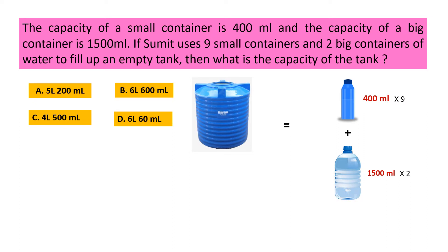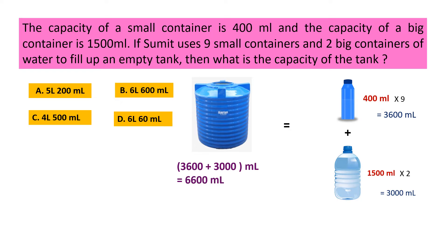Now let's find out the capacity of the tank. Capacity of nine small containers is equal to 400 milliliter multiplied by 9, which equals 3600 milliliter. The capacity of two big containers is equal to 1500 milliliter multiplied by 2, which equals 3000 milliliter. So the capacity of the tank is 3600 plus 3000 milliliter, which equals 6600 milliliter.